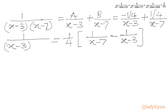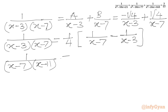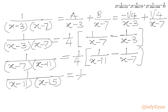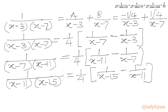Similarly, 1 over (x minus 7)(x minus 11) equals 1 over 4 times [1 over (x minus 11) minus 1 over (x minus 7)]. And the last term, 1 over (x minus 11)(x minus 15), equals 1 over 4 times [1 over (x minus 15) minus 1 over (x minus 11)]. Now we add these three expressions together.